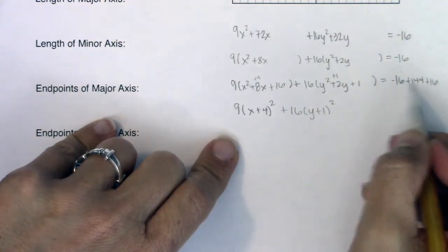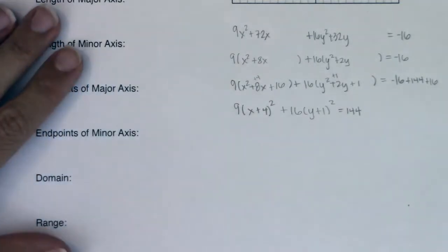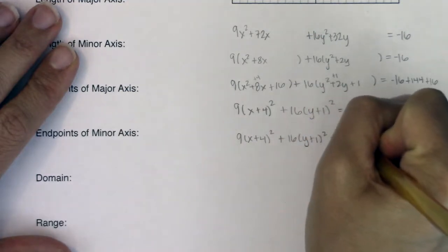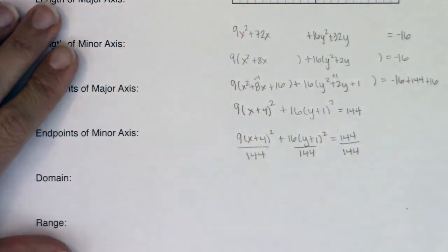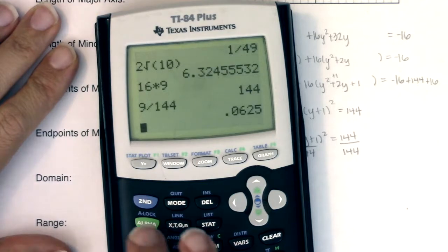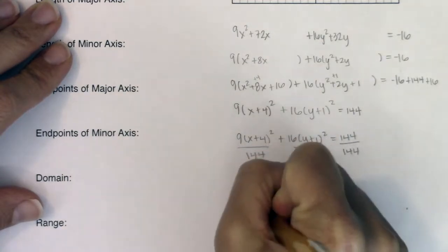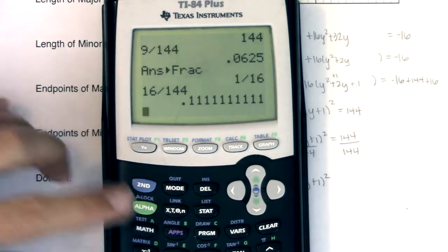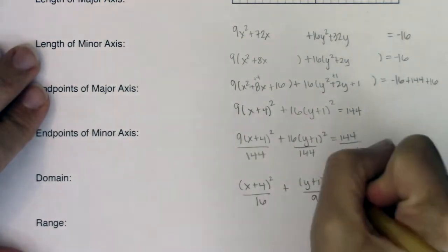Negative 16 plus 16 is 0, and 0 plus 144 is 144 on the right side. I'm getting closer to standard form, but I don't have a 1 on the right side yet. So I'm going to divide every term by 144. Nine over 144 is 1/16, giving (x plus 4) squared over 16. Sixteen over 144 reduces to 1/9, giving (y plus 1) squared over 9 equals 1. Now we have our ellipse in standard form.